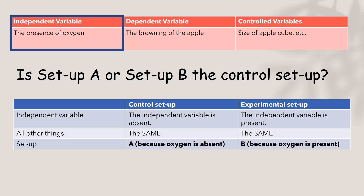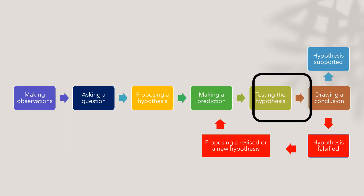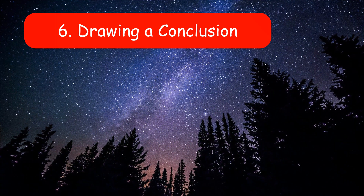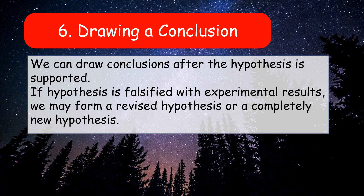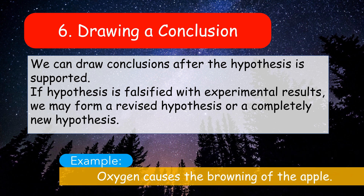Setup A is the control setup because oxygen is absent. For setup B, oxygen is present, meaning the independent variable is present, making it the experimental setup. Finally, drawing a conclusion. We can draw conclusions after the hypothesis is tested. If the hypothesis is falsified by experimental results, we may form a revised or completely new hypothesis. For example, our hypothesis is that oxygen causes the browning of the apple. After completing the experiment, we find that the apple turns brown with the presence of oxygen, but without oxygen, the apple doesn't turn brown. Therefore, the experimental results support our hypothesis, and our conclusion is that oxygen causes the browning of the apple.